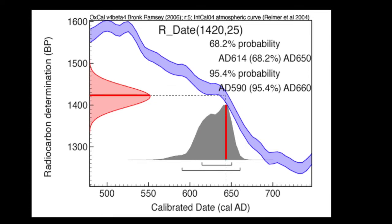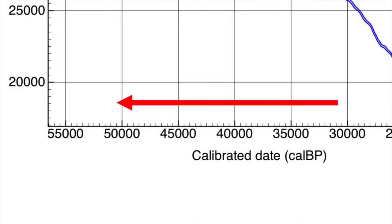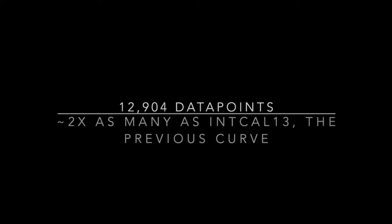An updated and extended radiocarbon calibration curve called IntCal20 has been published by the IntCal Working Group. It extends calibration for terrestrial samples back to 55,000 years ago. IntCal20 now has 12,904 data points, nearly double the number in IntCal13.